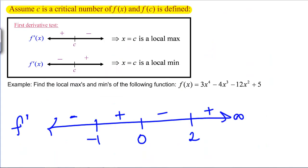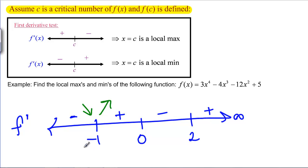Let's use this on the function 3x⁴ minus 4x³ minus 12x² plus 5, which we calculated the F-prime number line for earlier. At negative 1, we have F-prime being negative, meaning our function is going downhill. On the other side of negative 1, we have F-prime positive, so our function is going uphill. This means our function has a local min at x equals negative 1.